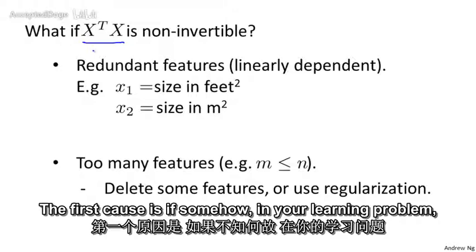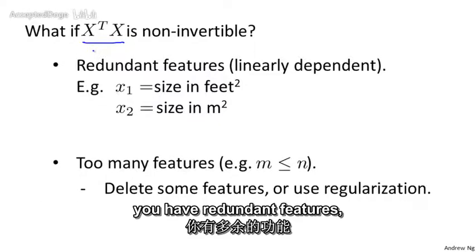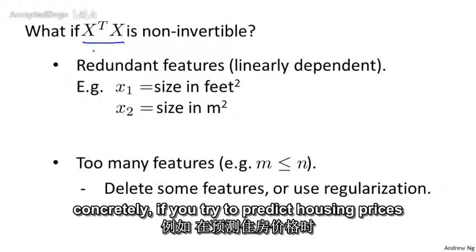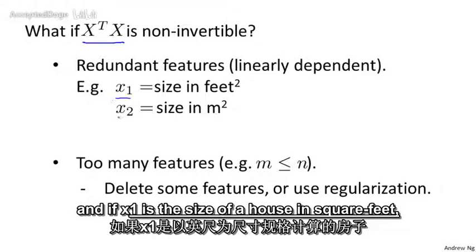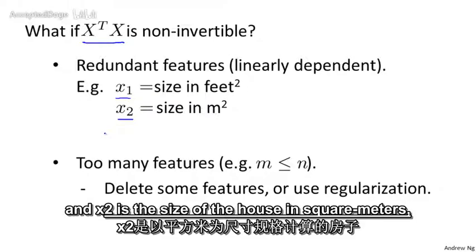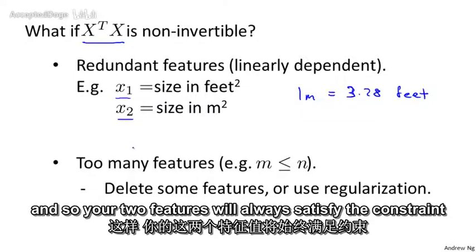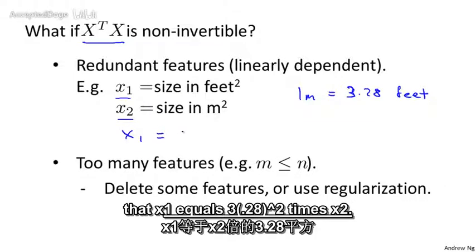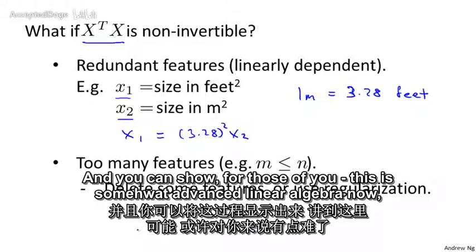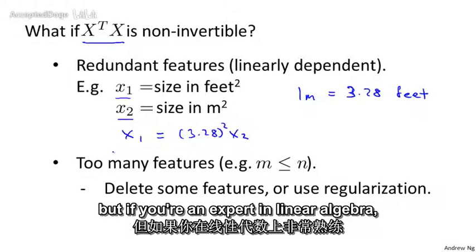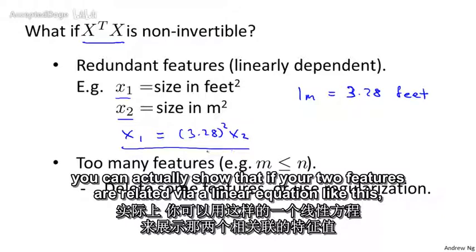The first cause is if somehow in your learning problem, you have redundant features. Concretely, if you're trying to predict housing prices, and if x1 is the size of the house in square feet, and x2 is the size of the house in square meters, then one meter is equal to 3.28 feet, rounded to two decimals. And so your two features will always satisfy the constraint that x1 equals 3.28 squared times x2. And you can show, for those of you that are somewhat advanced in linear algebra, but if you're an expert in linear algebra, you can actually show that if your two features are related via a linear equation like this,